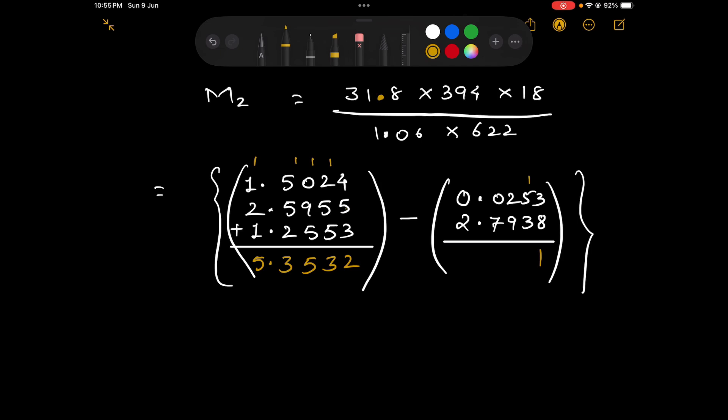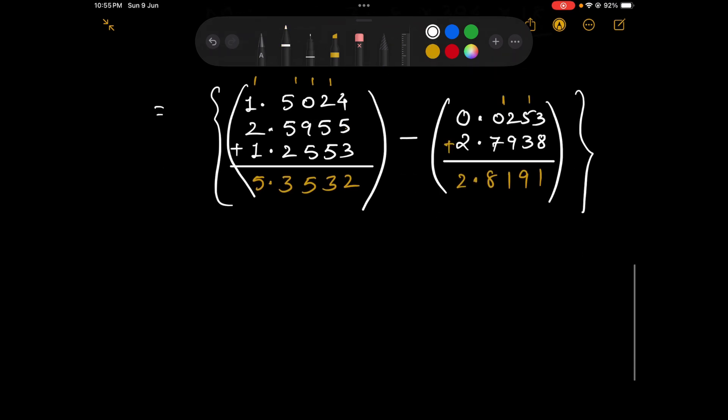This is 2.8191. Now we can simply write antilog but yet we are supposed to be subtracting and then only we can find out the final numbers antilog.